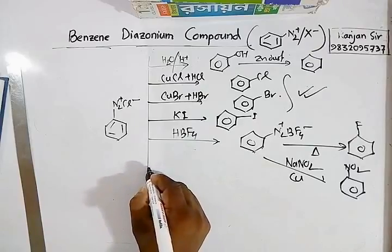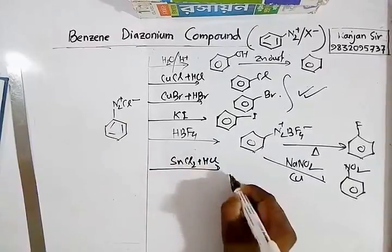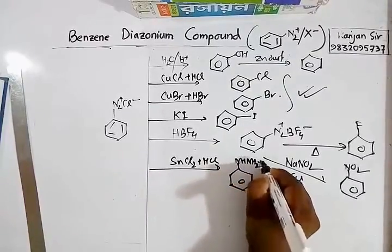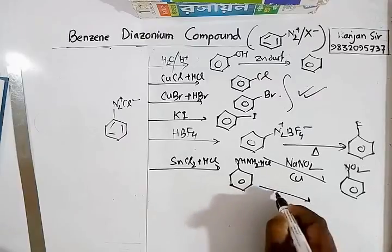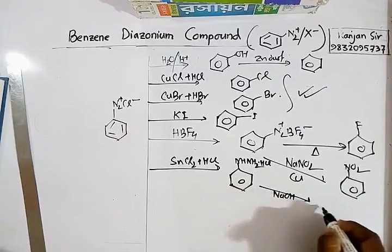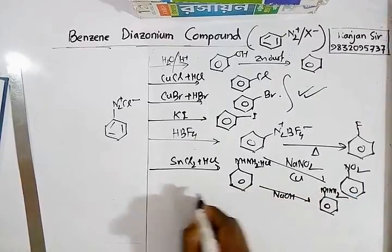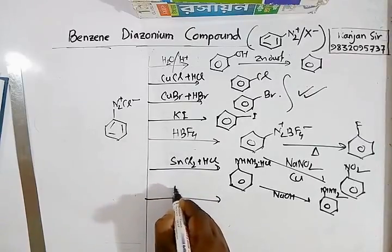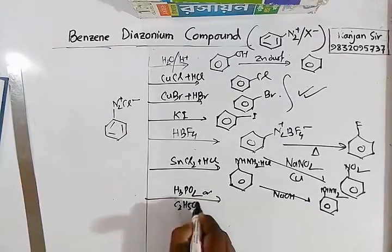Another important reaction: if you use a reducing agent such as SnCl2 plus HCl, the product in acidic medium is phenylhydrazine hydrochloride (C6H5-NH-NH2·HCl). If a small amount of alkali is added, the HCl is removed and you get phenylhydrazine (C6H5-NH-NH2).